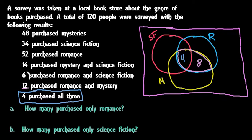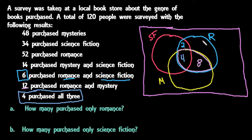Moving to the next one: we want a total of 6 who purchased romance and science fiction. Looking at the overlap of romance and science fiction, we need a total of 6 there. That means only 2 purchased science fiction and romance but not mystery.